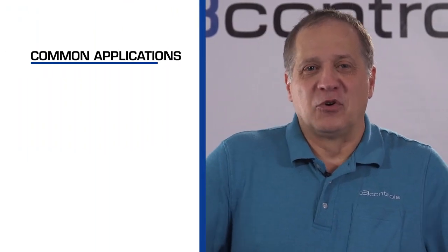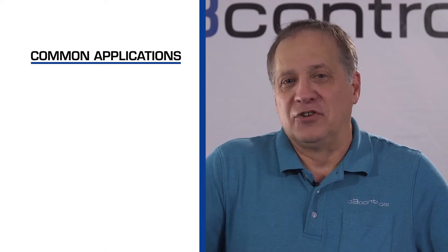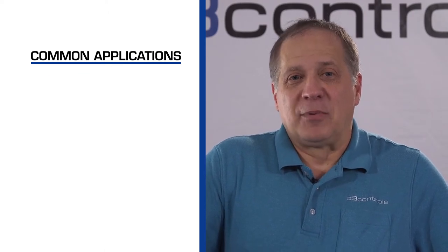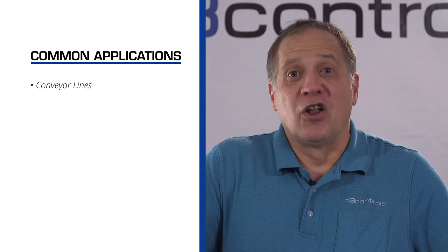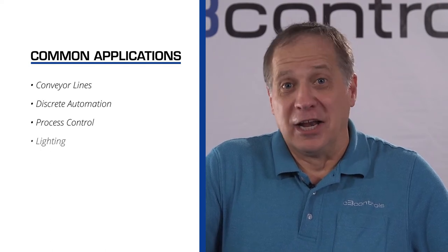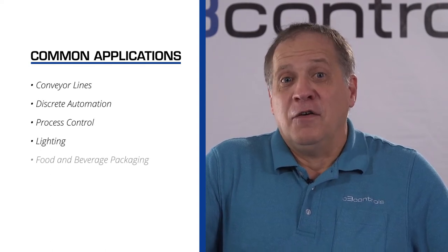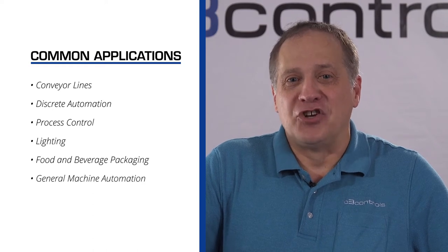So, where are electronic timing relays used in factories? The several functions and features of this critical component make it an important element in a wide range of applications. Some of the most common applications for these devices are conveyor lines, discrete automation, process control, lighting, food and beverage packaging, and general machine automation.